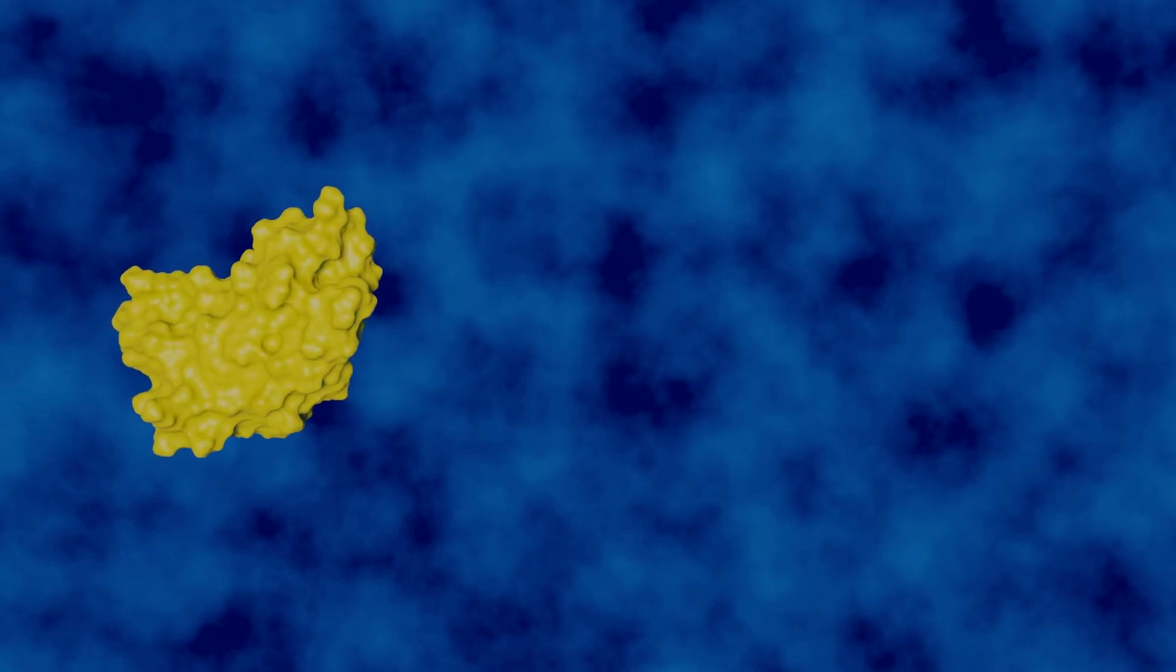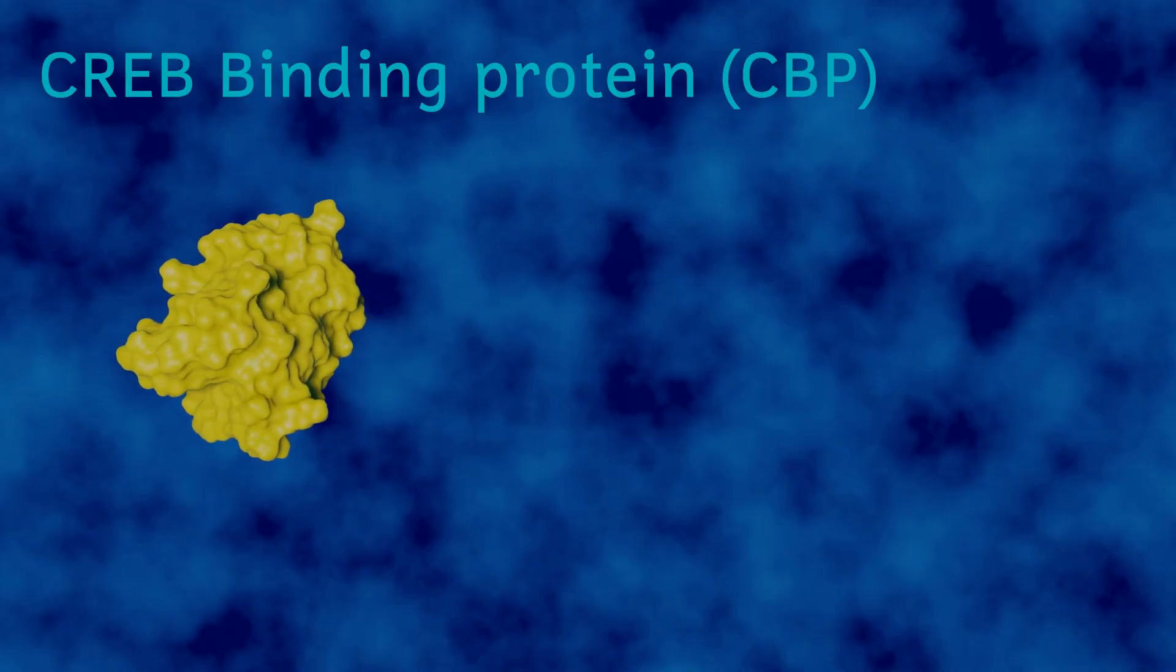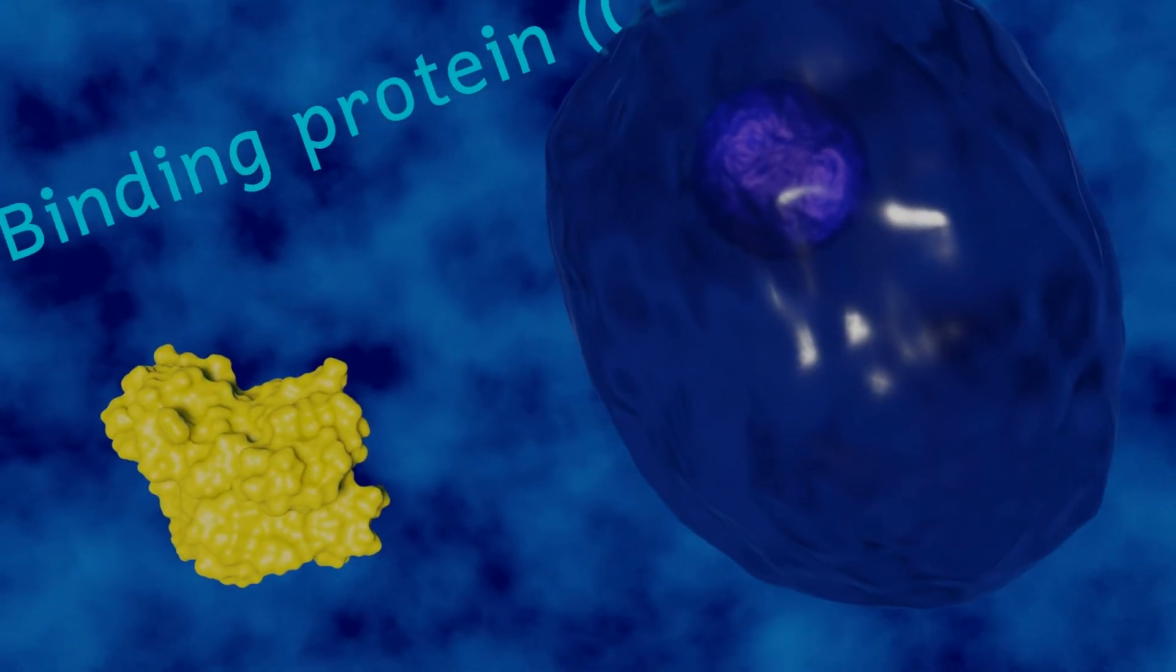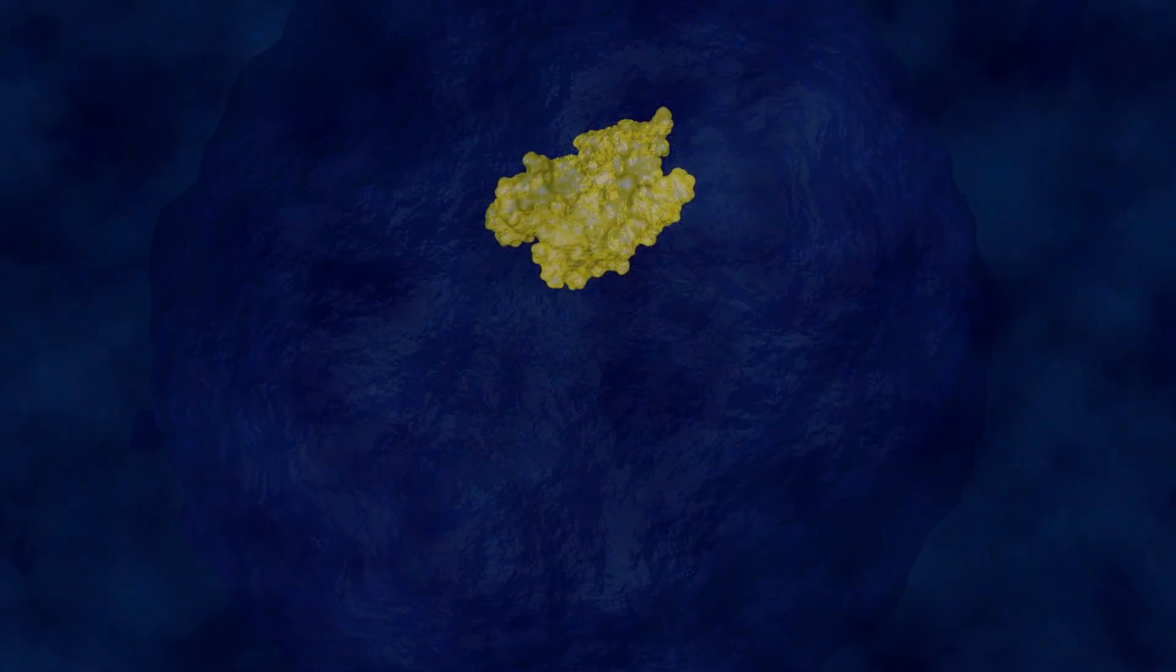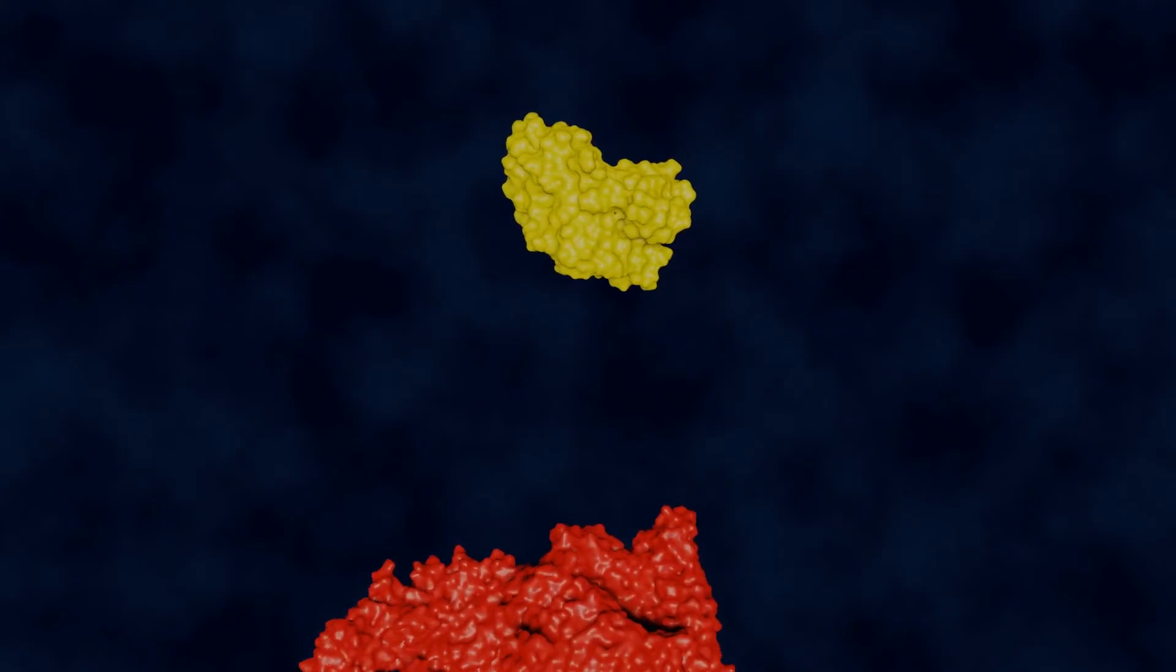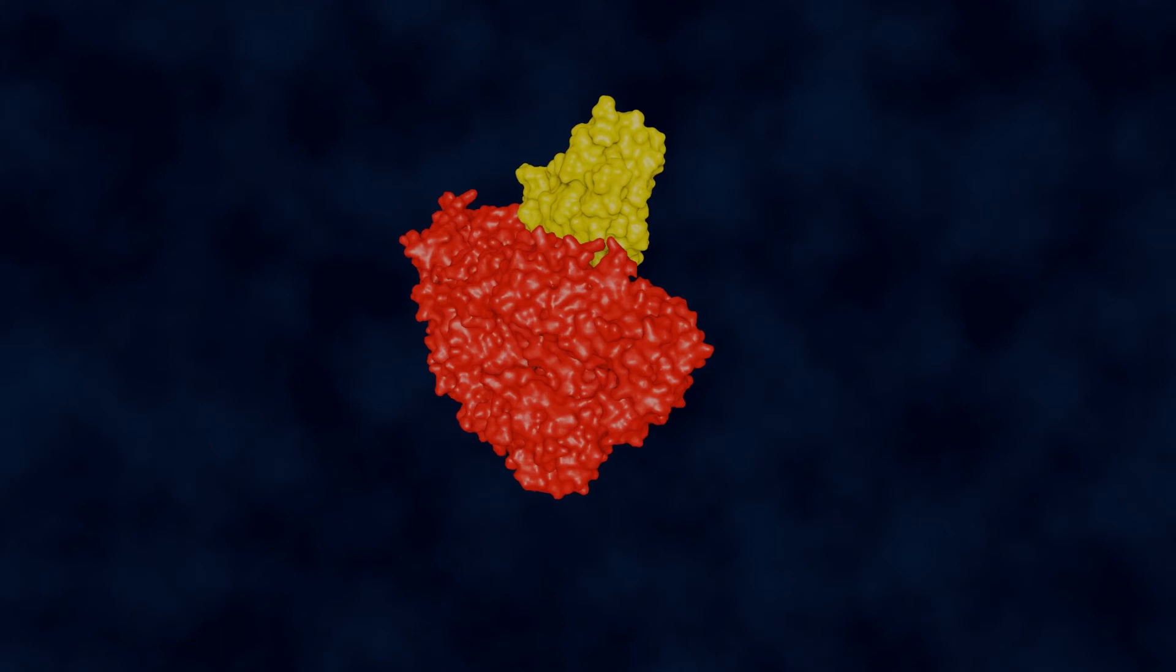The altered Huntington protein is also able to capture and disrupt the activity of other proteins. One such protein is the CREB binding protein or CBP. This small protein normally sits in the nucleus of the cell and switches on genes that are needed for the cell's survival pathway and this ensures that the cell remains alive. The altered Huntington protein captures the CBP and takes it away from its normal location preventing it from doing its job of keeping the cell alive.